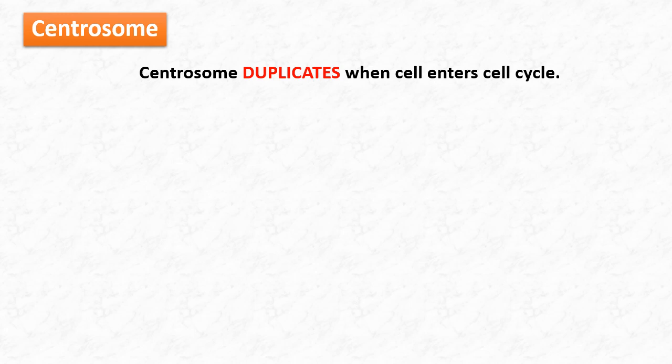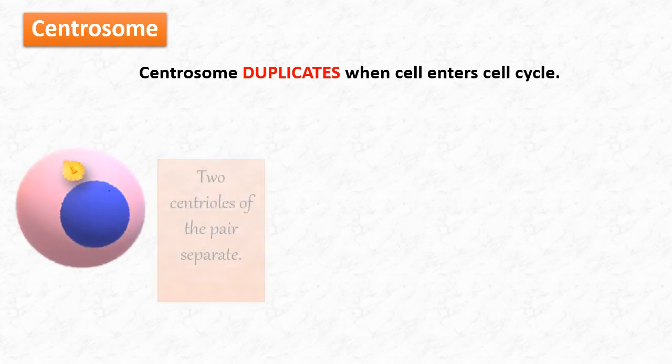The centrosome duplicates when the cell enters the cell cycle. When the cell reaches mitosis there are two centrosomes. Let's understand how this duplication of centrosomes takes place. This is our cell with single centrosome. When the cell enters cell cycle, the two centrioles of the pair separate during the G1 phase of interphase.